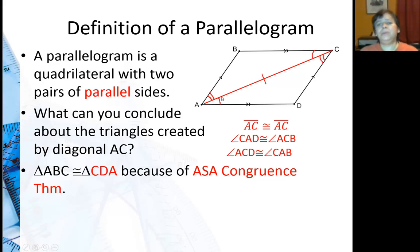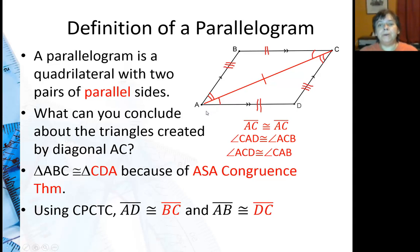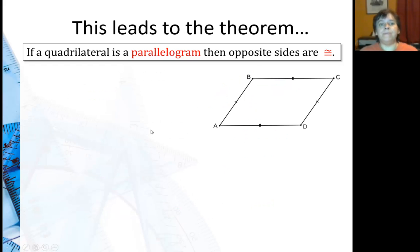And the reason I can say those two triangles are congruent is by angle, side, angle congruence. And then, the other thing I can conclude, since the triangles are congruent, the corresponding parts are also congruent. So this leads us to the theorem that if a quadrilateral is a parallelogram, then opposite sides are congruent.